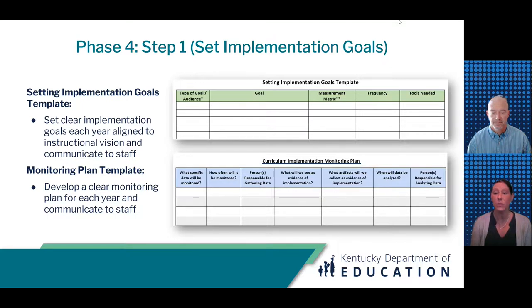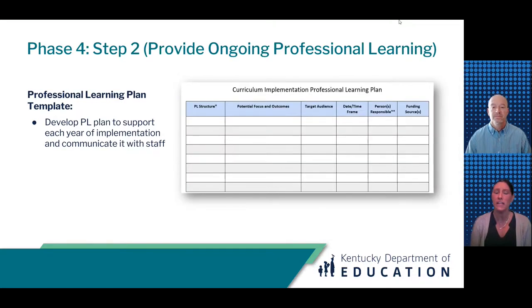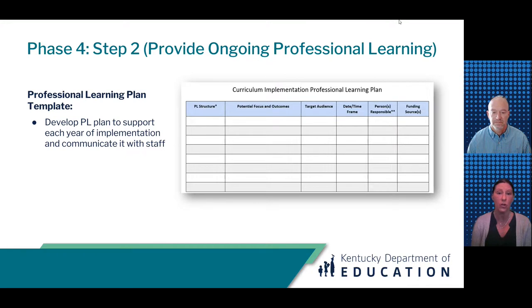Once drafted, it is important to communicate goals and the monitoring plan to stakeholders to gather input and set clear expectations for the upcoming year. High-quality professional learning is an engine for continuous improvement—a point we have tried to make throughout this module. The curriculum implementation professional learning plan tool helps guide PL planning by focusing on key logistics including the structure of the PL, identification of key outcomes, and other important considerations. It is also important to involve stakeholders in the creation of the PL plan and to communicate it in a timely manner.